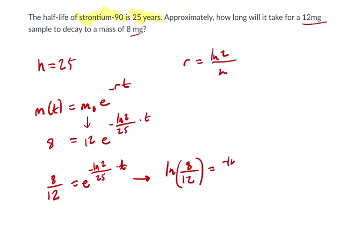Now what's nice about this is then we just get negative ln of 2 over 25 equals t. And to solve for this, we can multiply by the reciprocal of this fraction on both sides.